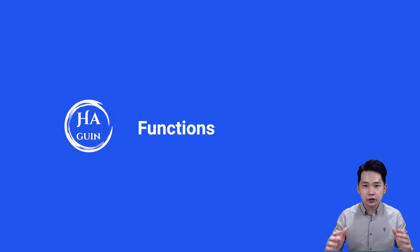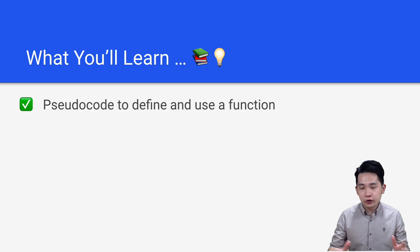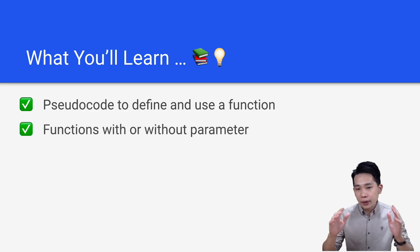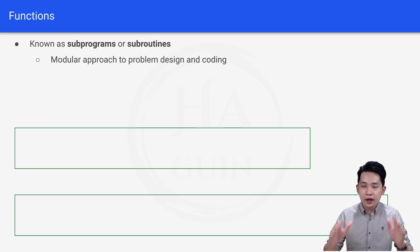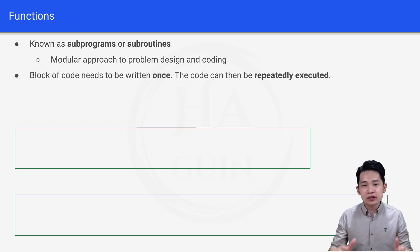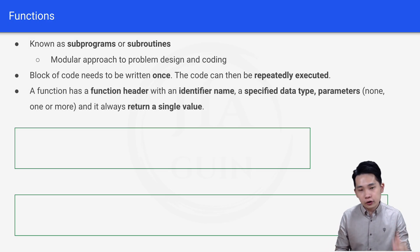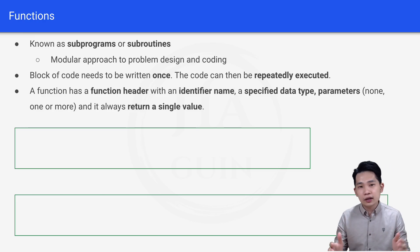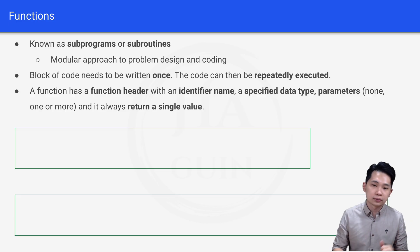Welcome back. Let's talk about functions. For this video you'll be learning the pseudocode to define and use a function, as well as functions with or without parameters. A function is also known as a subprogram or subroutine — it's a modular approach to problem design and coding. A block of code needs to be written once and can then be repeatedly executed. A function has an identifier name, a specific data type, parameters that can be none, one, or more, and it always returns a single value. Returning a single value is the biggest difference between functions and procedures.